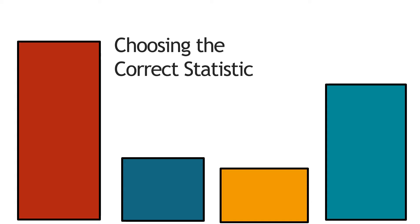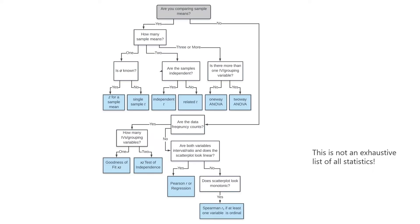So here I'm trying to give you an overview of the statistics that we're going to work with in this class. This flowchart shows you the different statistics, highlighted in blue, that we're going to make some decisions about and work with in this video. This is not an exhaustive list of all statistics ever — it's just what we're covering in this introductory class.